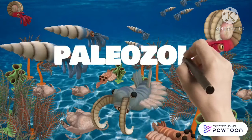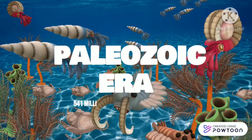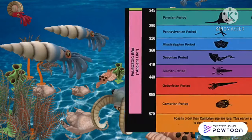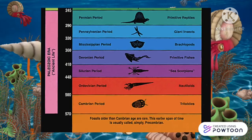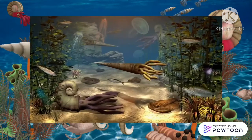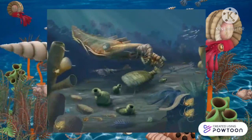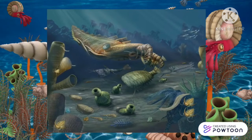The Paleozoic Era began 541 million years ago with the Cambrian Explosion, an extraordinary diversification of marine animals, and ended with the End-Permian Extinction, the greatest extinction event in Earth's history. The major divisions of the Paleozoic era, from oldest to youngest, are the Cambrian, Ordovician, Silurian, Devonian — the period of development of fishes — and last is the Permian period.